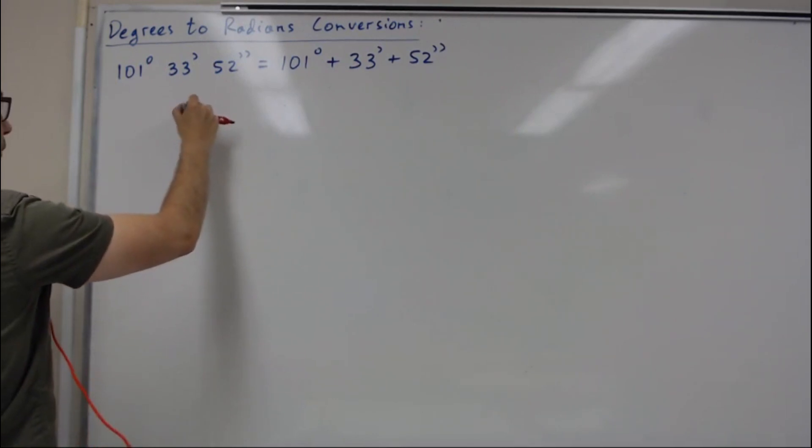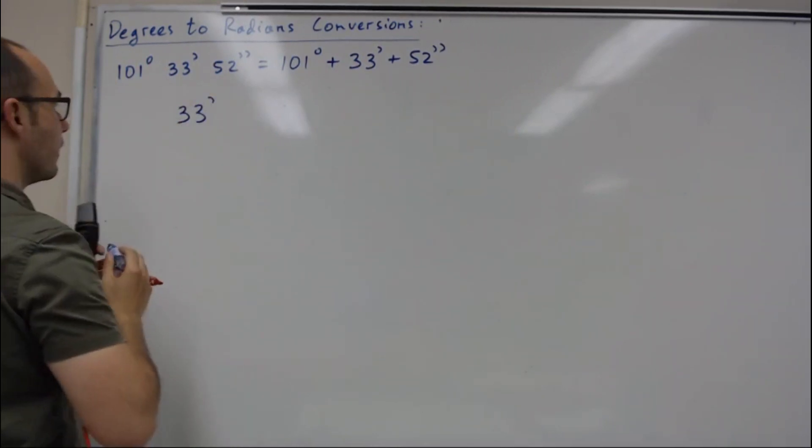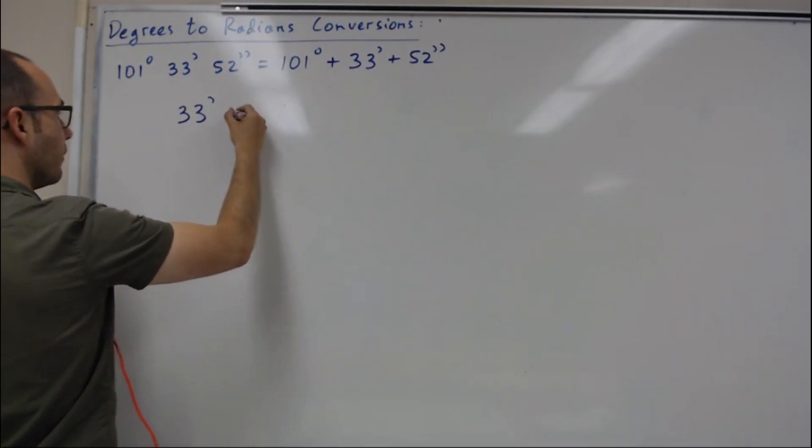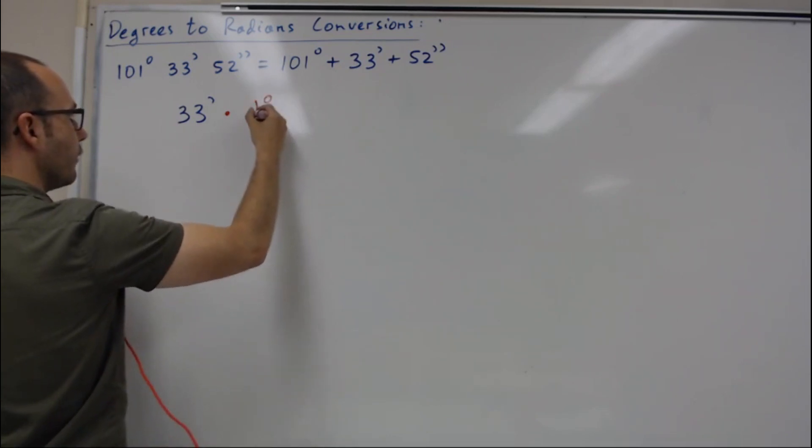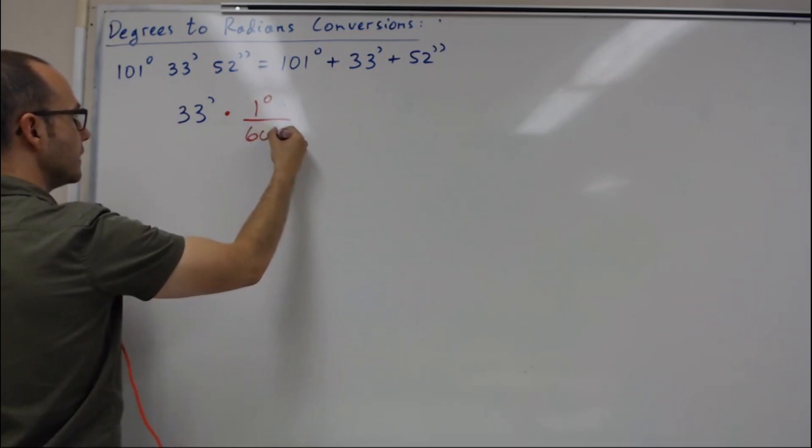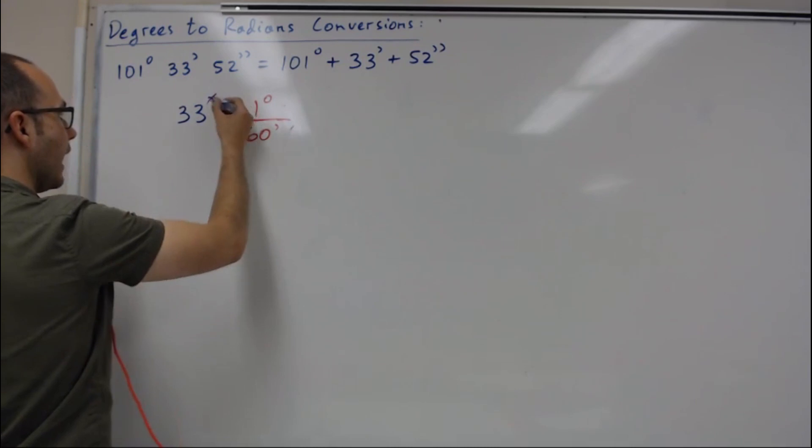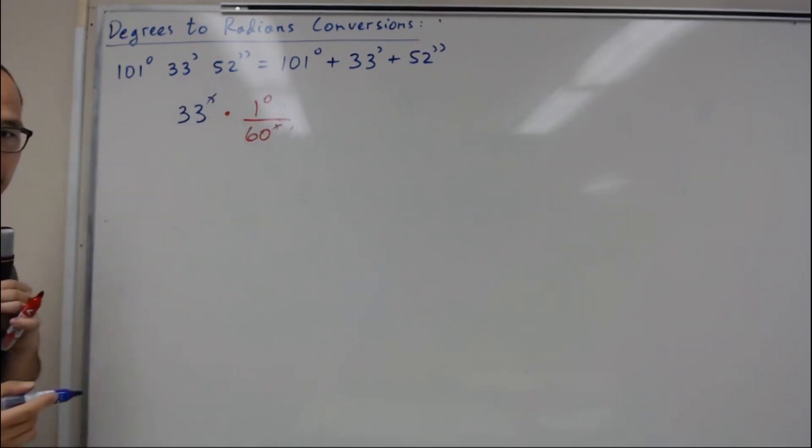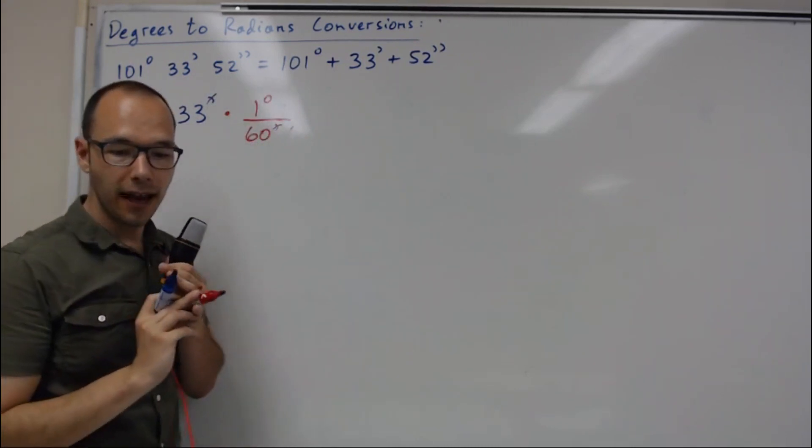I'm going to convert my 33 minutes. I'm going to multiply that by 1 degree for 60 minutes. So I'm going to multiply by the conversion factor that will cancel out the minutes and I'm going to be left with